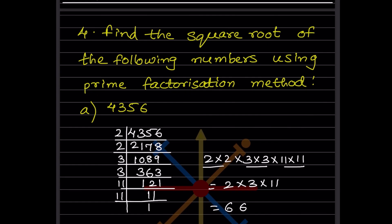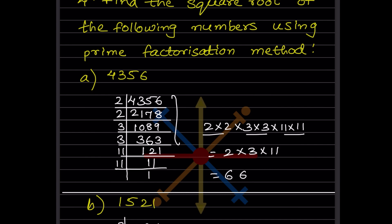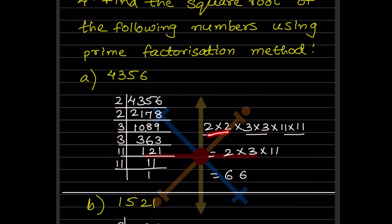To find the square root using the prime factorization method, always start dividing by 2, then 3, and so on. For the first number, dividing gives factors including two 2s, two 3s, and two 11s. Pairing the factors — writing each pair once — gives 2×3×11 = 66 as the square root.